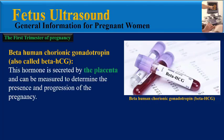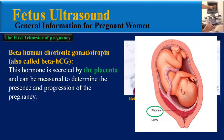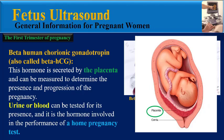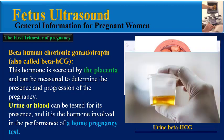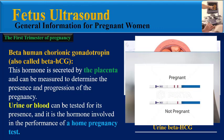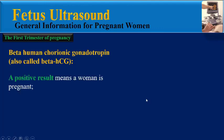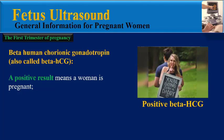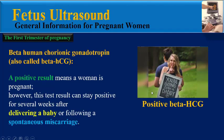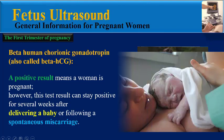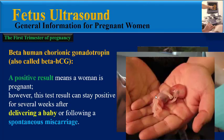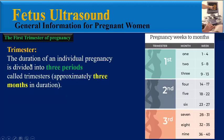Beta human chorionic gonadotropin, also called beta HCG, is a hormone secreted by the placenta and can be measured to determine the presence and progression of the pregnancy. Urine or blood can be tested for its presence, and it is the hormone involved in the performance of a home pregnancy test. A positive result means a woman is pregnant; however, this test result can stay positive for several weeks after delivering a baby or following a miscarriage.